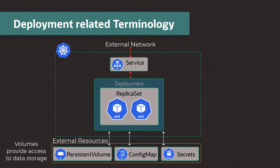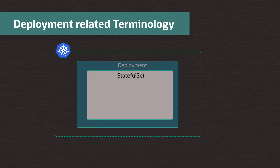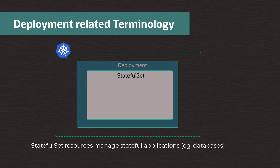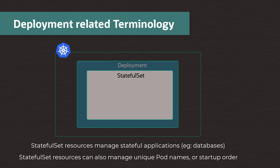The last term we'll cover today is a stateful set. This is used in deployments where there is, for example, a requirement to start pods in a set order, or to assign them defined unique identifiers. In other words, this ensures consistent identities are always applied. These identities represent things such as network definitions, storage, etc. For example, if your application consists of a web-based application reliant on an underlying database, the start process would ensure that the database is up and running prior to starting the web-based application.